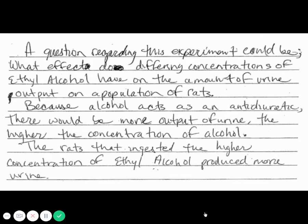Second one is: because alcohol acts as an antidiuretic, there would be more output of urine the higher the concentration of alcohol. So more output of urine, higher concentration of alcohol—that's a good hypothesis. And then the rats that ingested higher concentration of alcohol produced more urine. Absolutely, that's what happened. So this is three points out of three points.